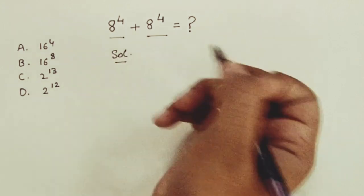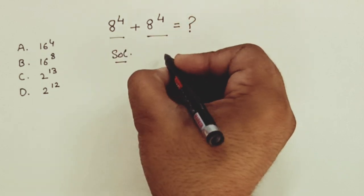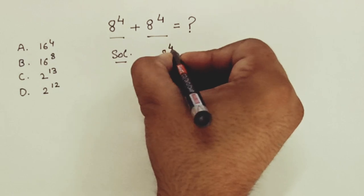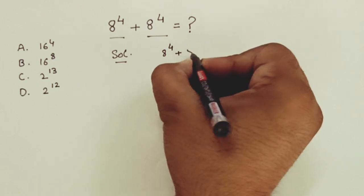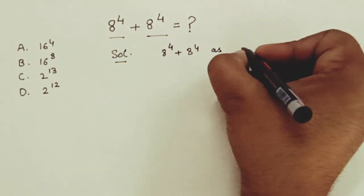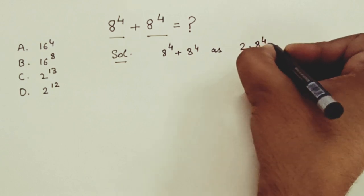Well, we will find this value. We can write this 8 raise to power 4 plus 8 raise to power 4 as 2 times 8 raise to power 4.